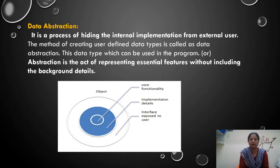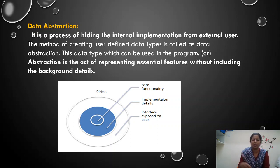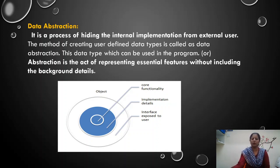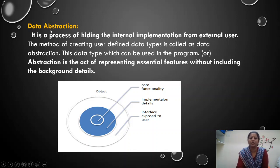The next is data abstraction. It is a process of hiding the internal implementation from the external user. It is a process of representing the essential features without including the background details. The internal core — what is happening — will not be exposed to the external user. The core functionality of a particular object is hidden from the external user. That is data abstraction.